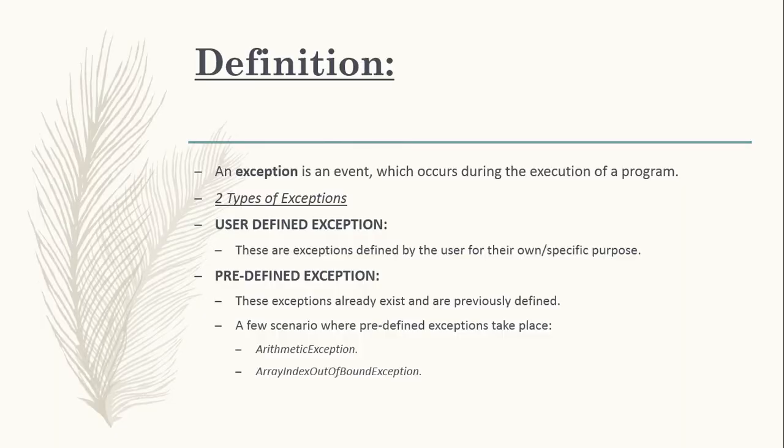Definition for Exception Handling: An exception is an event which occurs during the execution of a program. It disrupts the normal flow of a program. There are two types of exceptions: user-defined exception, which is defined by the user, and pre-defined exception, which is already defined.